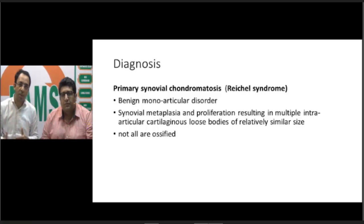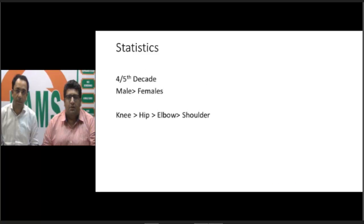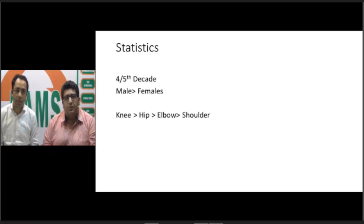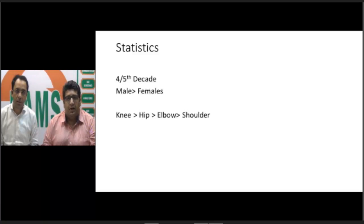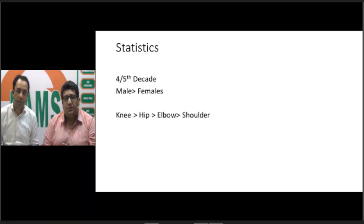When we see such a patient with typical X-ray findings of multiple loose bodies, the diagnosis of synovial osteochondromatosis or chondromatosis becomes obvious. It is more often seen in the fourth and fifth decade of life, is more common in males than females, and the knee is the most common site, accounting for almost 75% of clinical occurrences, followed by the hip, elbow, and shoulder. After the X-ray, the next investigation is MRI, as it helps plan treatment.